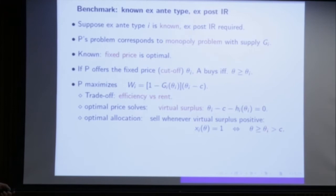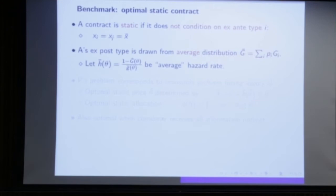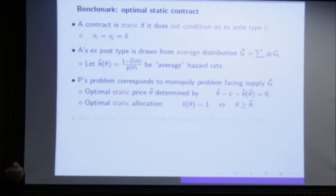Second benchmark: what if the principal cannot condition on I — the static situation where screening on the ex-ante private information is not allowed? Then the principal considers the average distribution, computes the hazard rate of that average distribution, and has the same monopoly problem with respect to the average distribution. There will be a cutoff again from the average virtual surplus. This is also what you get when the consumer gets all information upfront — just what happens in the traditional store.